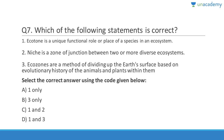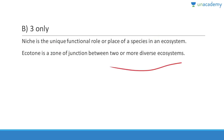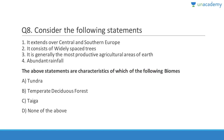Question 7: Ecotone is a unique functional role or place of a species in an ecosystem — that is wrong, that is niche. Niche is a zone of junction between two or more diverse ecosystems — that is ecotone. They have reversed 1 and 2. The answer is B, option 3 only. Niche is a unique functional role or place of a species in an ecosystem, and ecotone is a zone of junction between two or more diverse ecosystems.